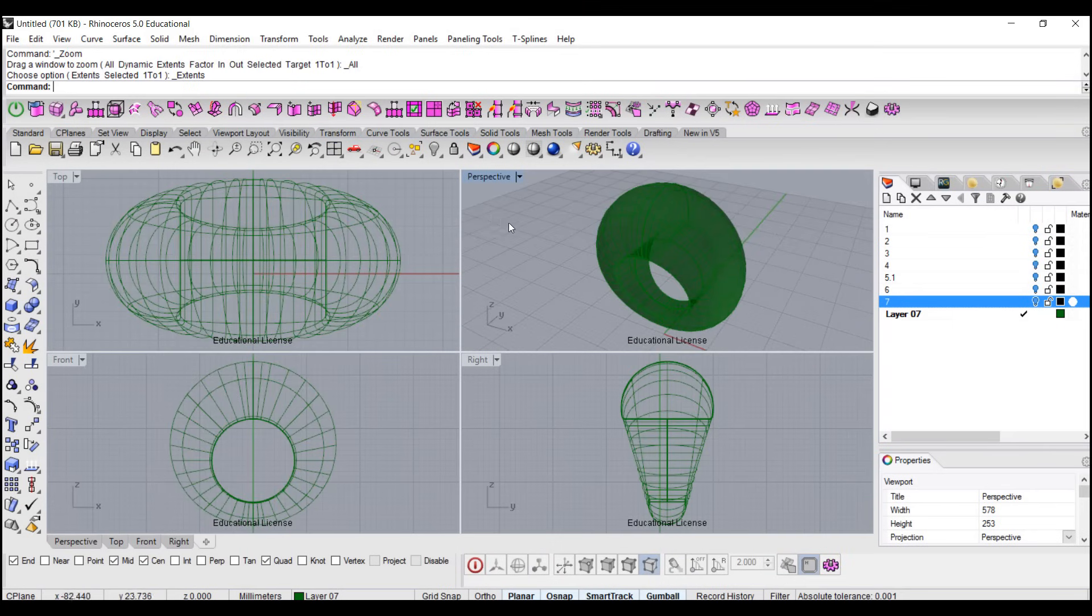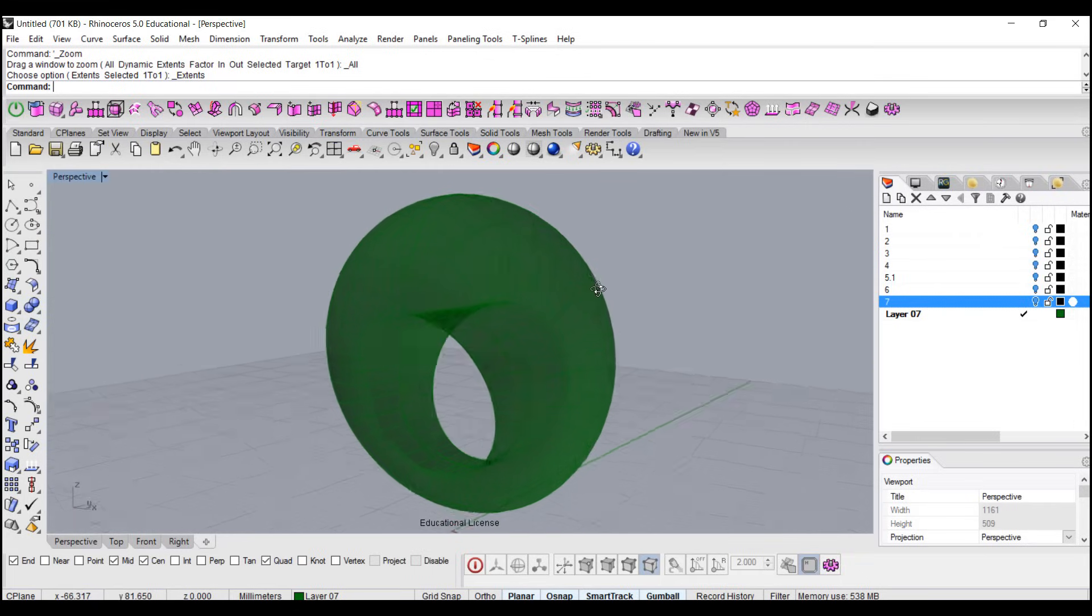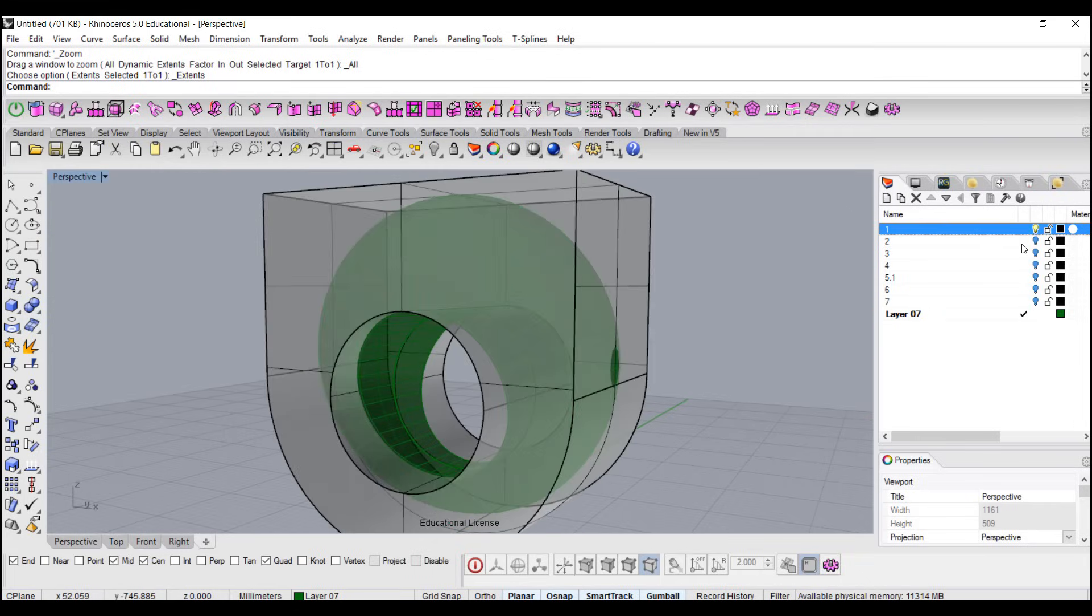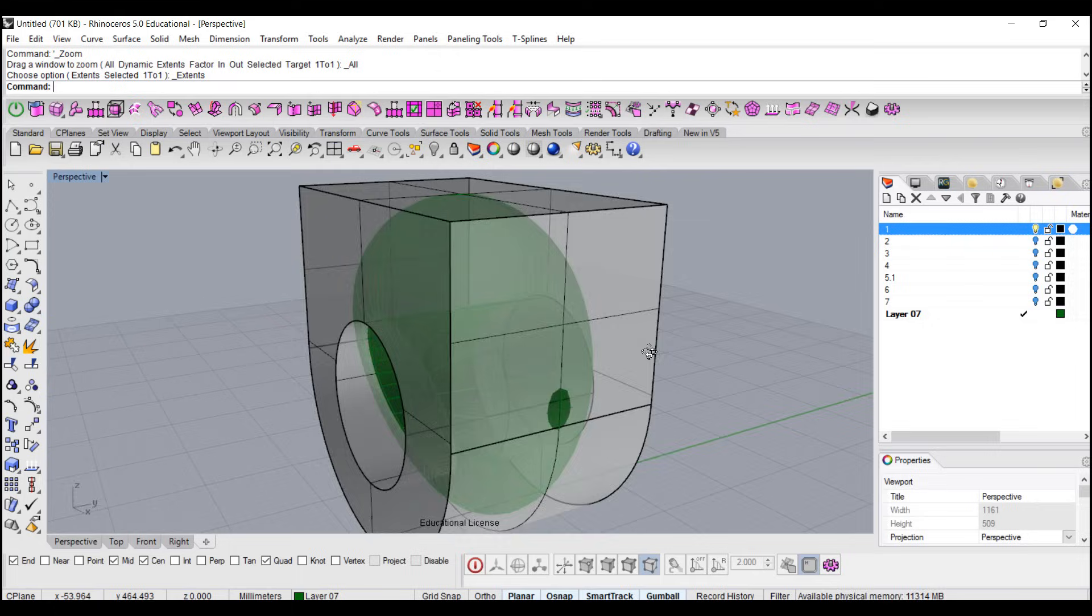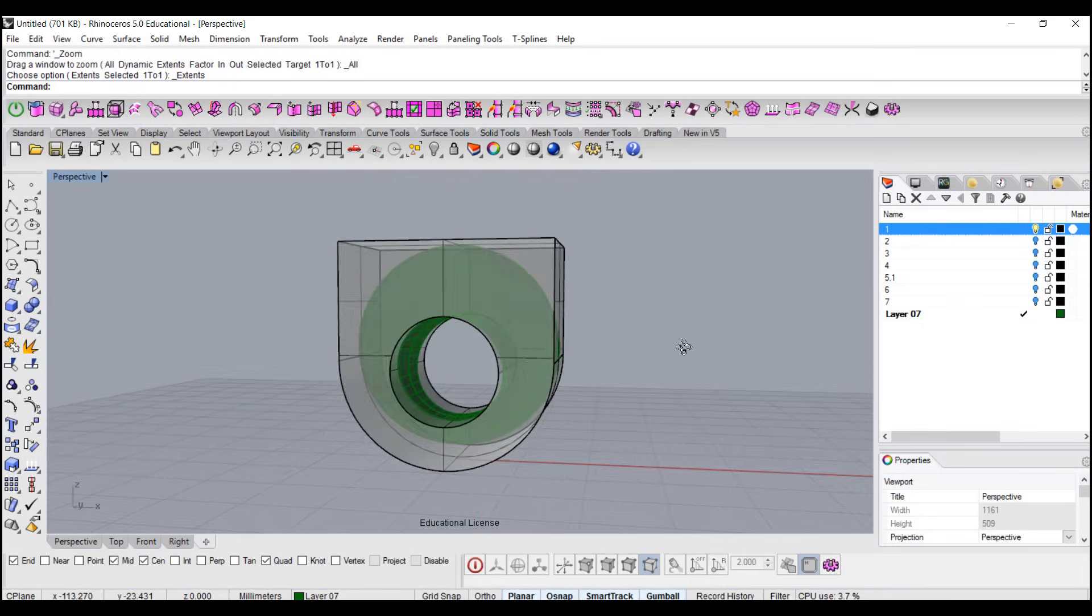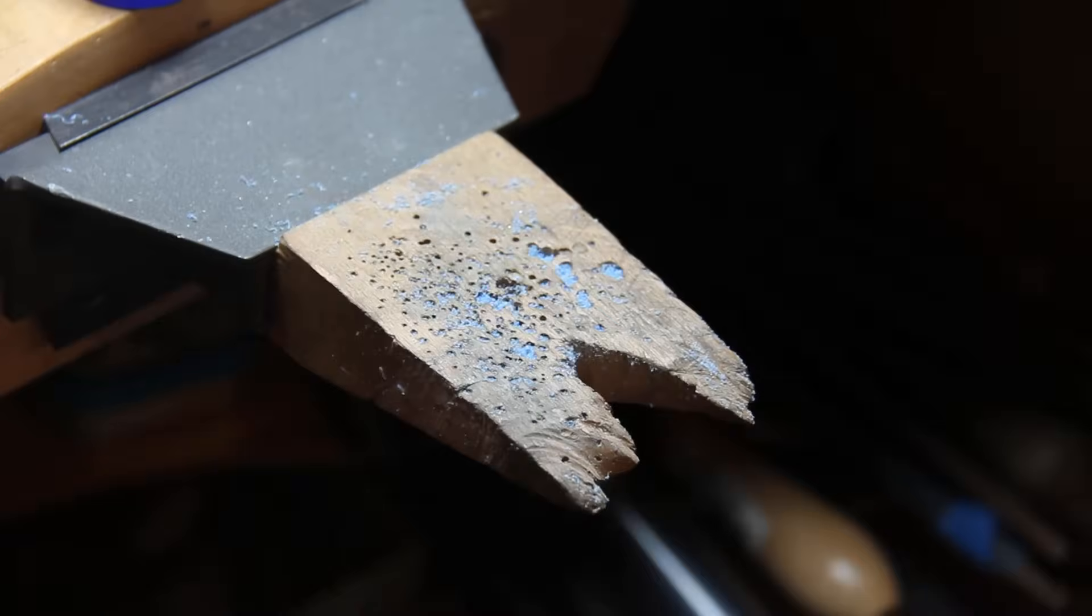So here's the CAD to tell you the form. This is what the end product is going to be. So we want to start from a block roughly like this. As you can see, I will try to save the material as much as possible, so you want to utilize all the material.